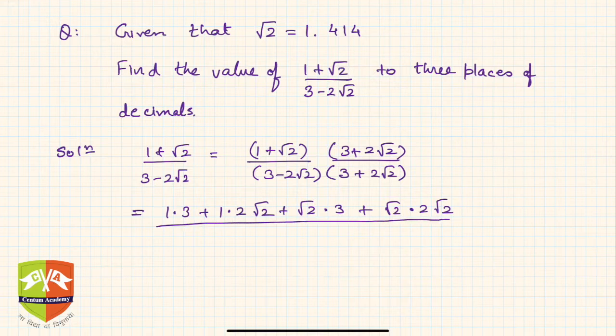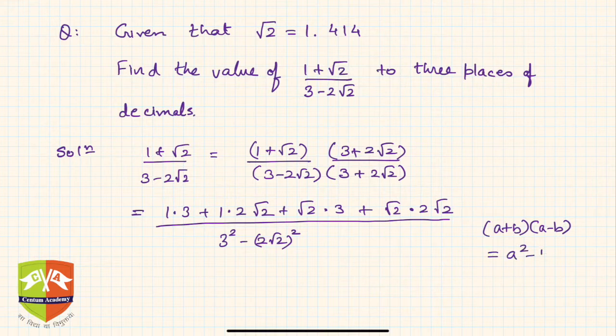And the denominator simply is 3 square minus 2 root 2 square. Why? Because you know a plus b times a minus b is equal to a square minus b square. So use that in the denominator.